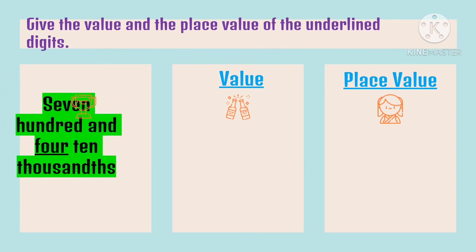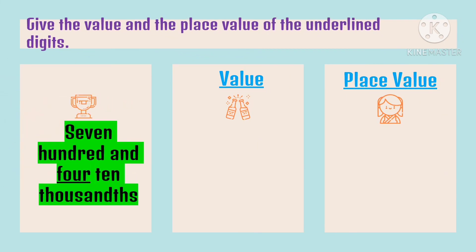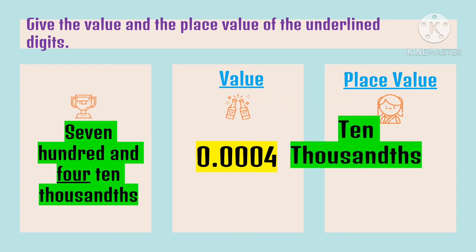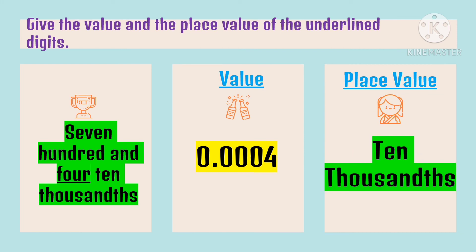Next: give the value and the place value of 7 hundred and 4 ten-thousandths. The underlined digit here is 4. The value of 4 is 4 ten thousands. We place three zeros as place value holders for the tens, hundreds, and thousands places, because the place value of 4 is ten thousands.